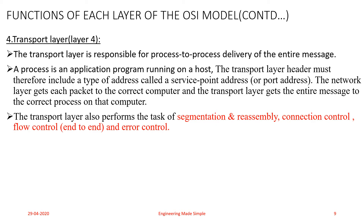Service point addressing: computers often run several programs at the same time. Source-to-destination delivery means not only from one computer to the next, but also from a specific process running on one computer to a specific process running on the other computer. The Transport layer header must include a type of address called a service point address or port address. The Network layer gets each packet to the correct computer; the Transport layer gets the entire message to the correct process on that computer.